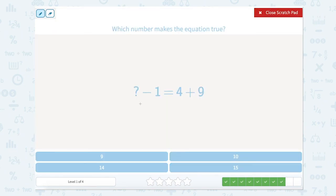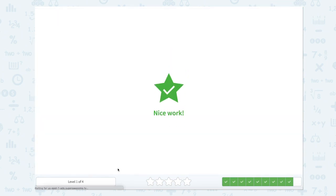Let's use our scratch pad again to look at the two sides of the equal sign. We have something minus 1 and 4 plus 9. Well, 4 plus 9 is 13. So something take away 1 equals 13. So 1 more than 13, which is 14. Nice work.